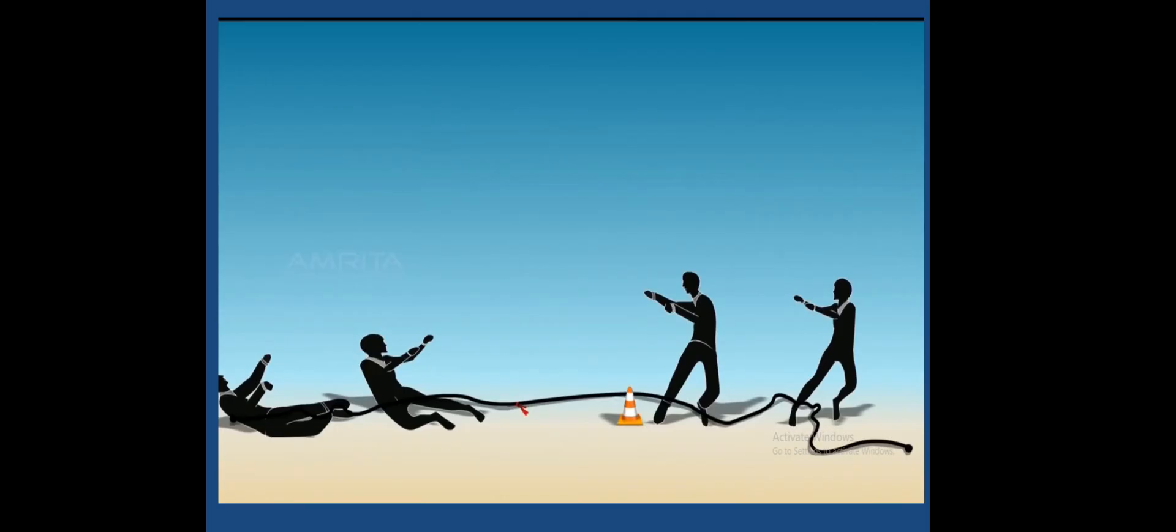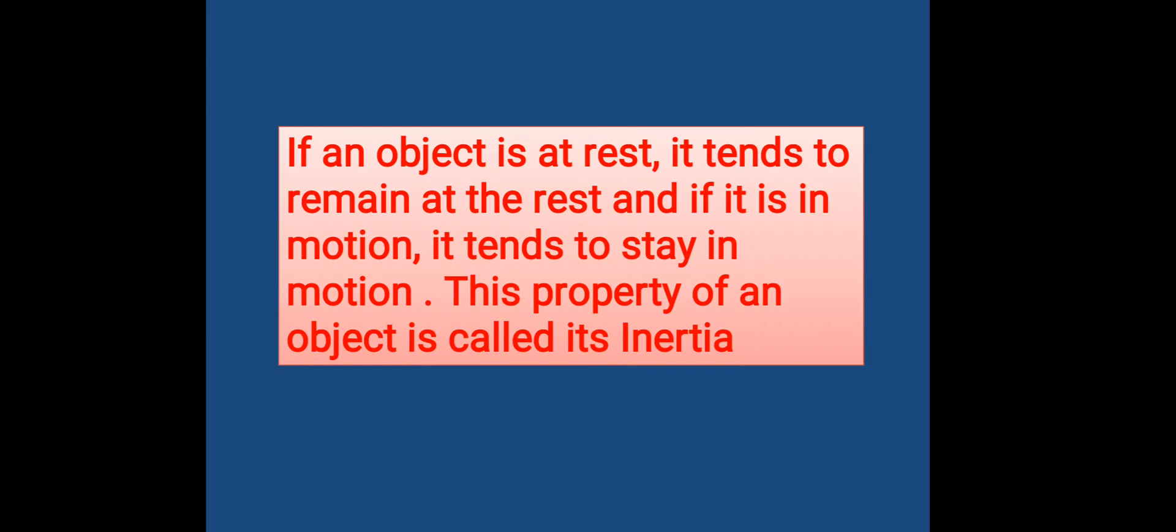This is due to inertia. Now, what is inertia? If an object is at rest, it tends to remain at rest, and if it is in motion, it tends to stay in motion. This property of an object is called its inertia.